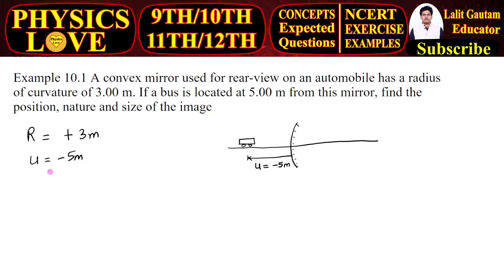Let us first find out the focal length of the mirror. The relation between focal length and radius of curvature is f equal to R by 2. R is 3 divided by 2, so it means focal length is equal to 1.5 meter.